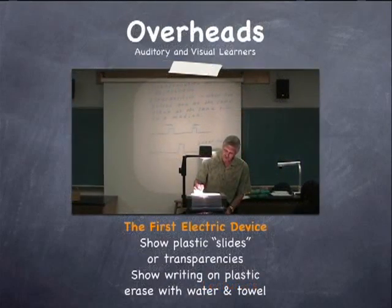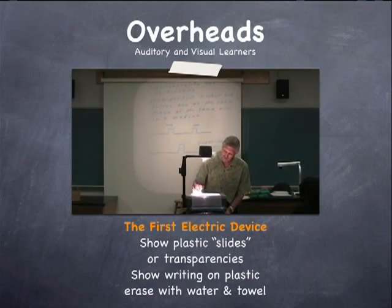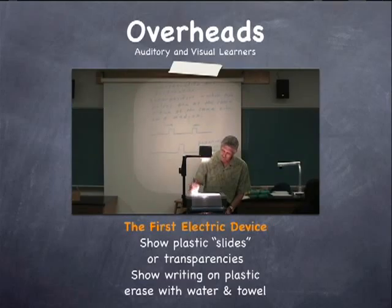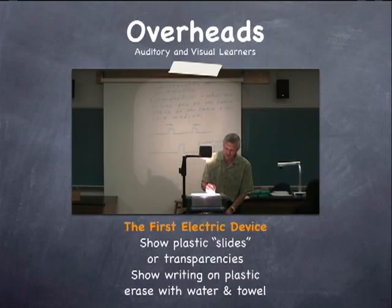Then came overheads. After blackboards became profuse, the first electrical — not electronic — device was the overhead projector. The main benefits of the projector were that transparencies could be made in advance, and they could be stored and used again and again. The plastic could also be printed on a laser printer and then written on with markers that can be washed off and reused.